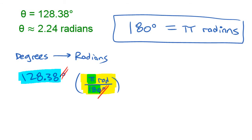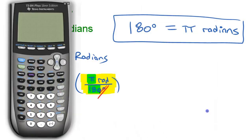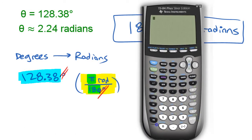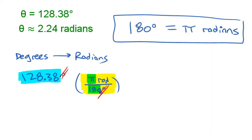So you just multiply in your calculator: 128.38 times pi divided by 180. That gives approximately 2.24 — the value we had. All we did was multiply by pi over 180.